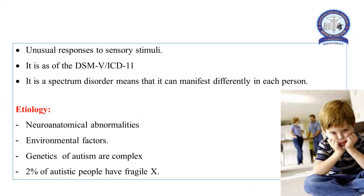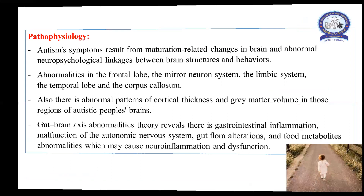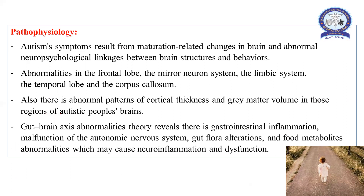Regarding autism etiology: there is no clear-cut etiology, but possible hypotheticals are neuroanatomical abnormalities and environmental factors. The genetic pattern in autism is complex, and 2% of cases of autism are related to Fragile X syndrome. The pathophysiology of autism is that autism symptoms result from maturation-related changes in the brain and abnormal neuropsychological linkage between brain structure and behavior.